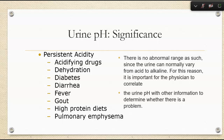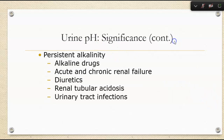We really want to make sure we're looking at the urine pH with other information, because we can't do anything with just the urine pH alone. We can see persistent alkalinity with alkaline drugs, acute and chronic renal failure, renal tubular acidosis, UTIs, and use of diuretics. These can kind of help point in the direction of a patient problem, but again, we can't use it alone.